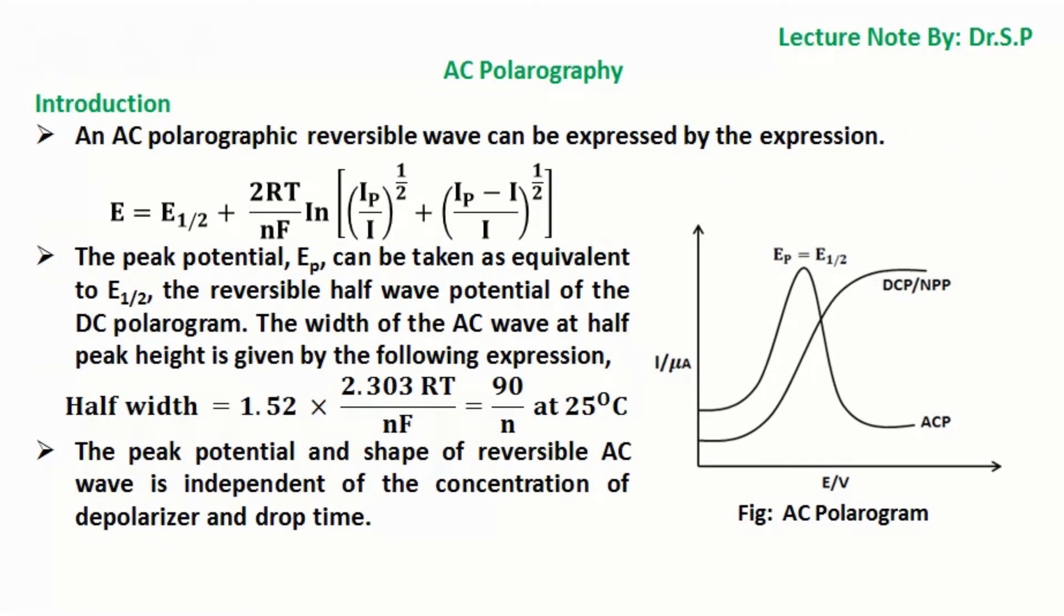An AC polarographic reversible wave can be expressed by the expression: E = E_1/2 + (2RT/nF) × ln[(i_p/i)^(1/2) + ((i_p - i)/i)^(1/2)]. The peak potential E_p can be taken as equivalent to E_1/2, the reversible half-wave potential of the DC polarogram.